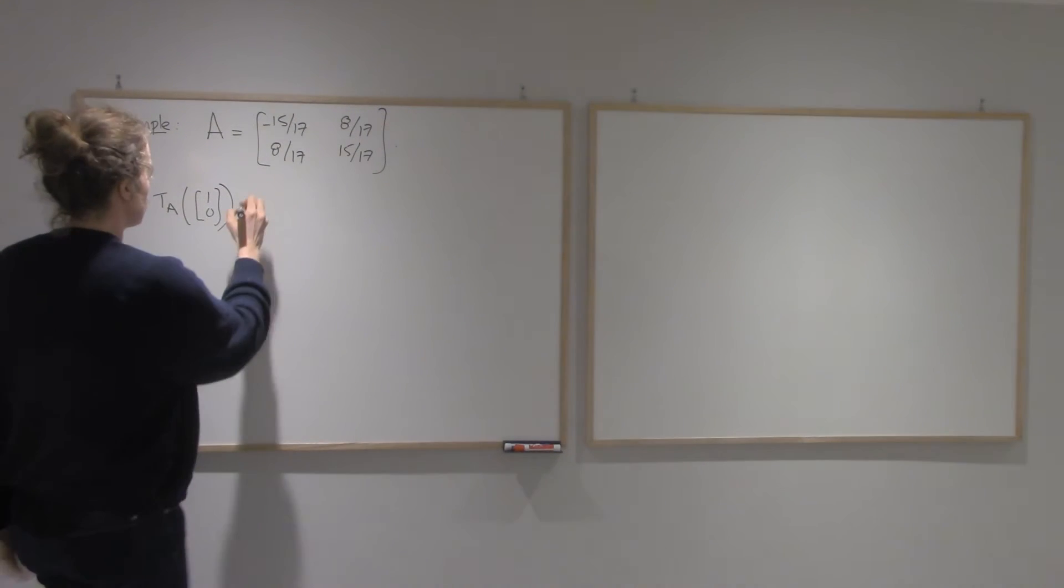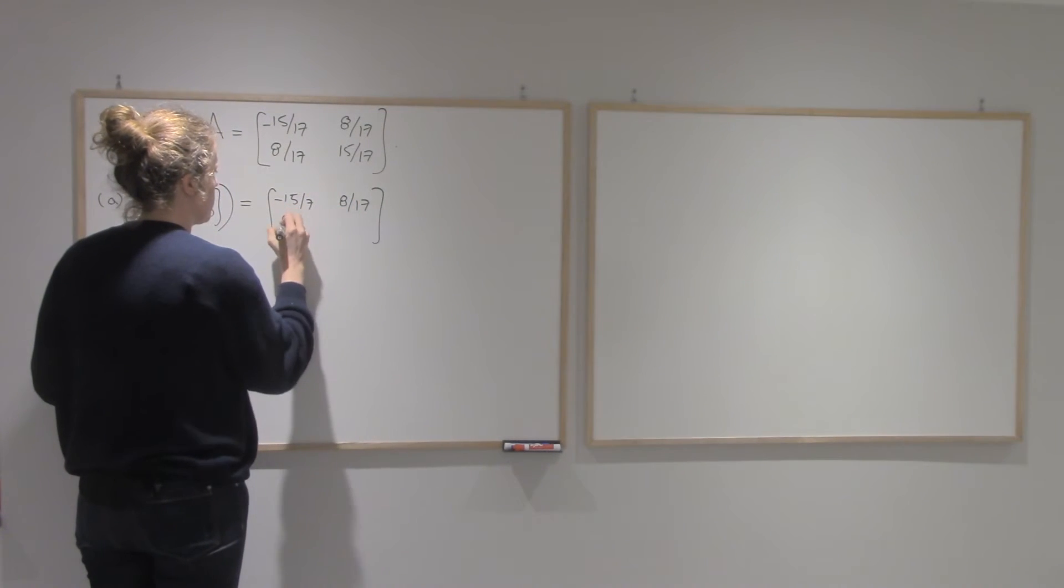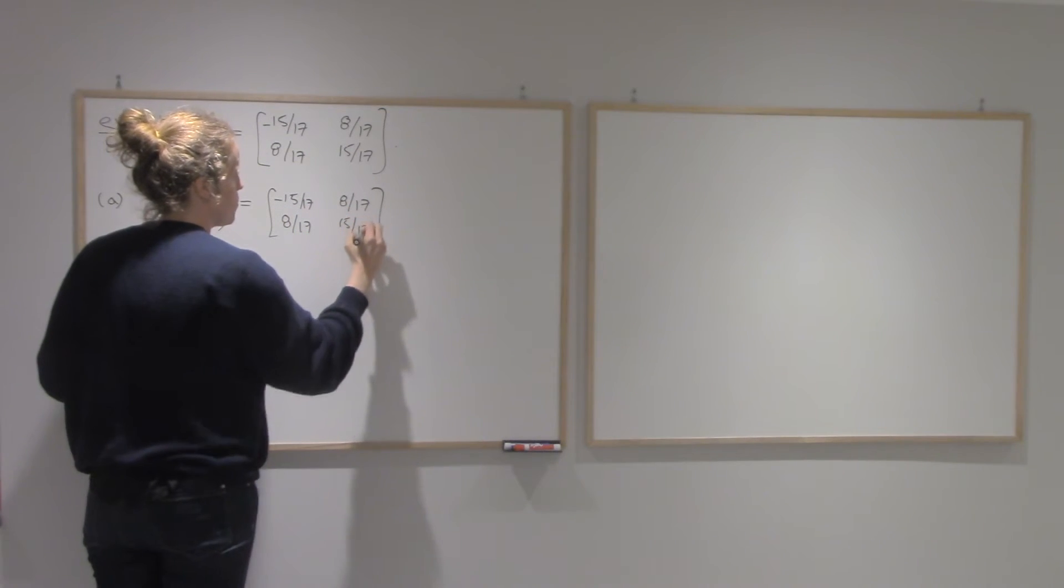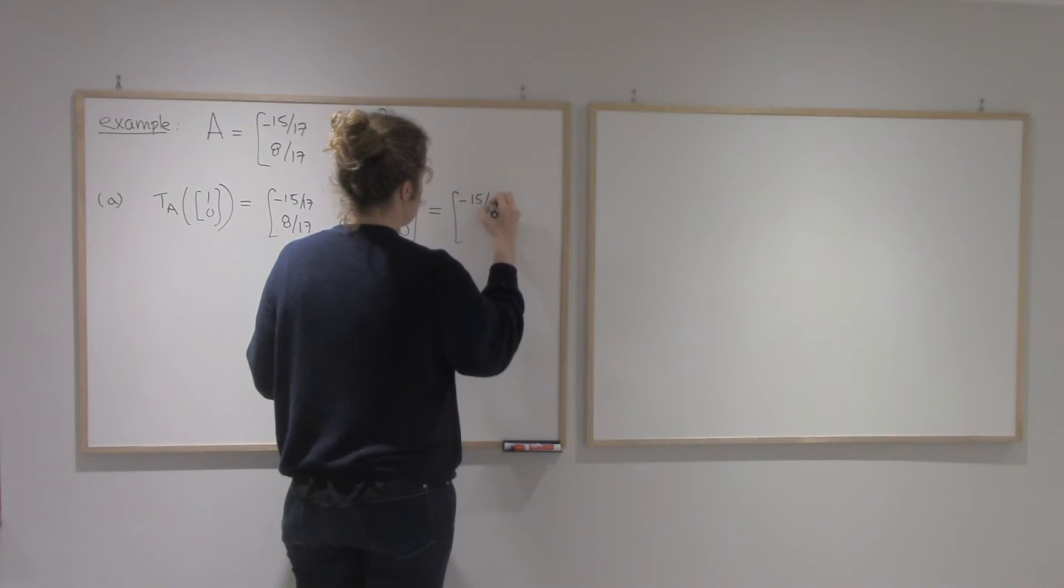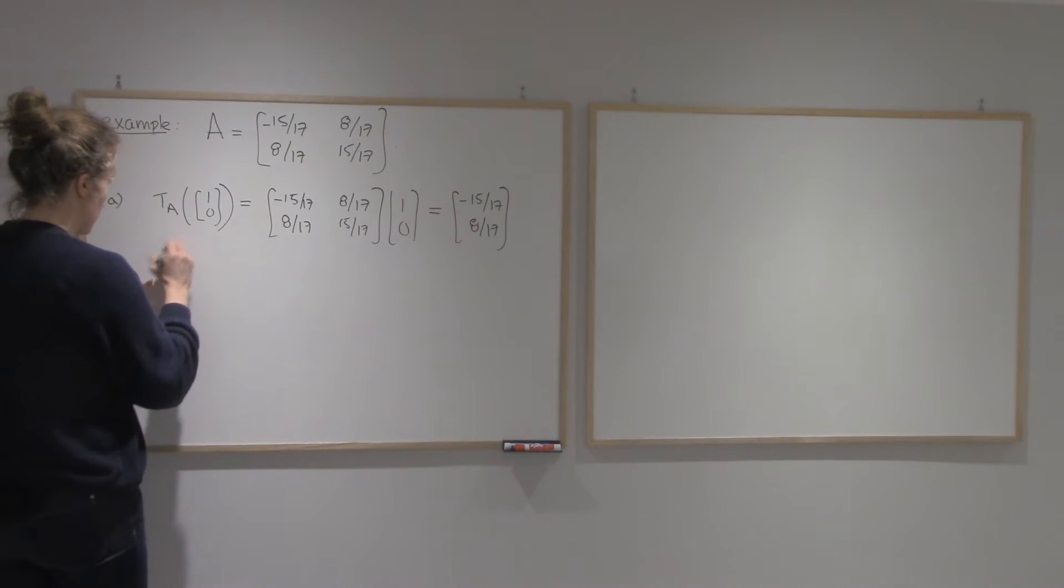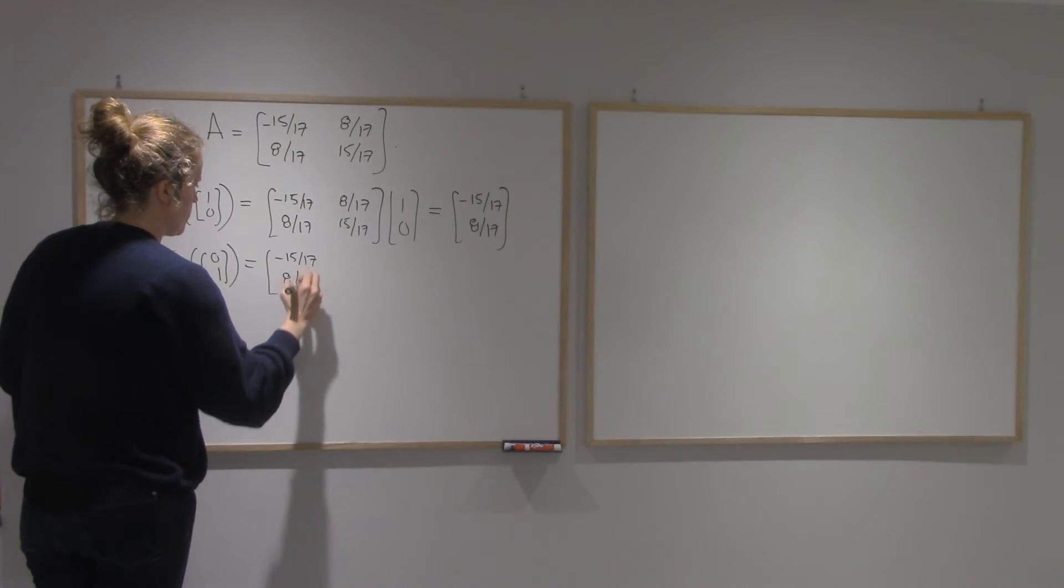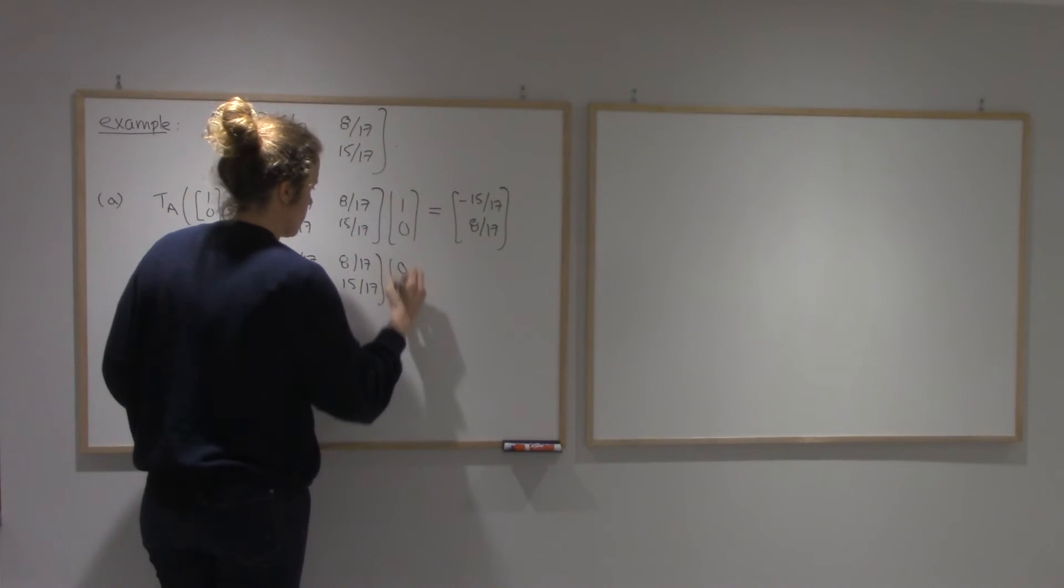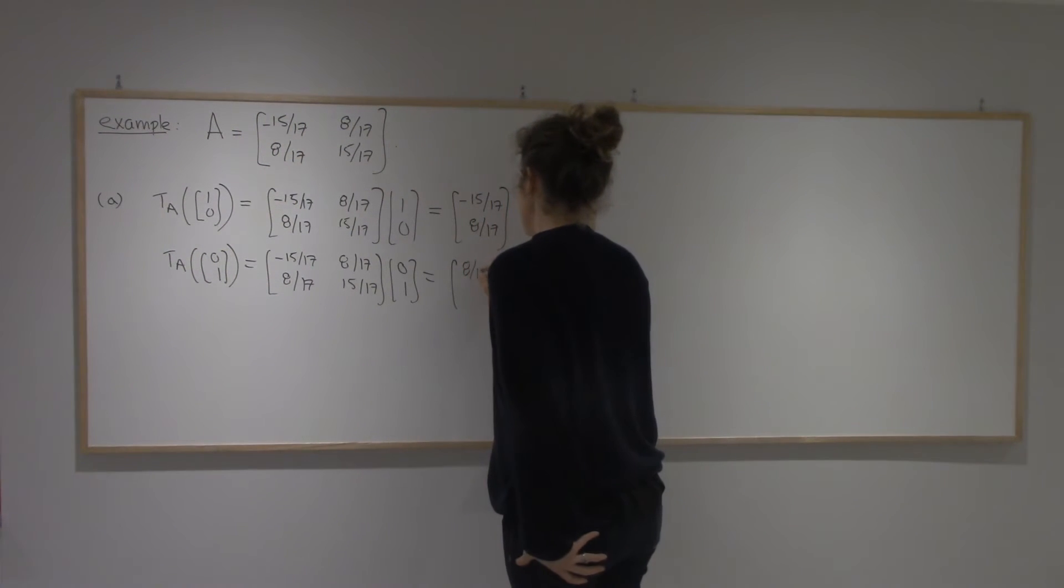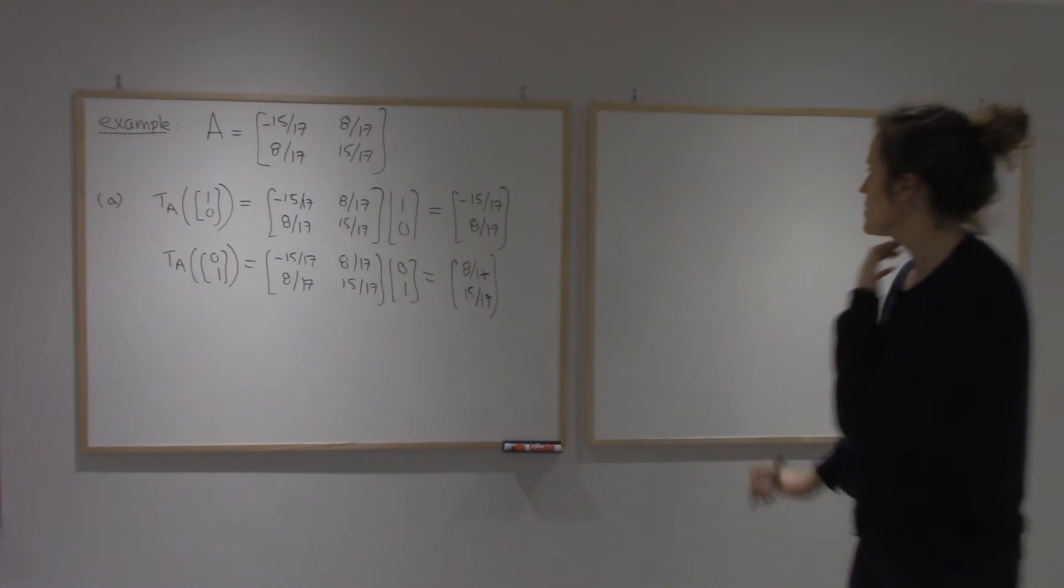So if I multiply (1, 0) by this matrix, I'm going to get the first column: minus 15 over 17 and 8 over 17. And if I look at the second basis vector,